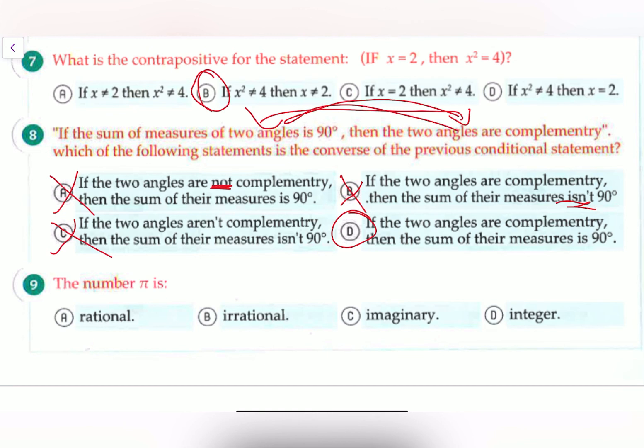That's what we're looking for. So our final question is 9, which is the number pi is. And we know that pi is an irrational number. So it is B, simply B.